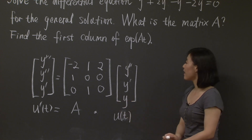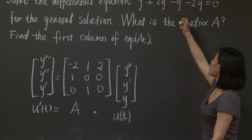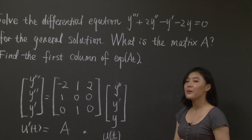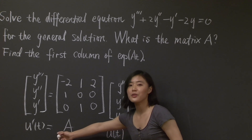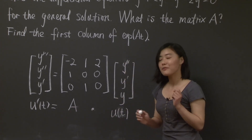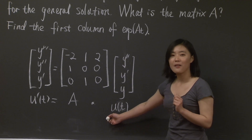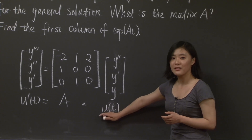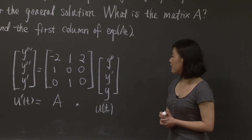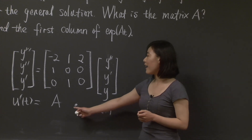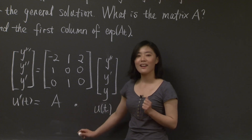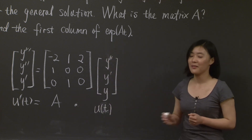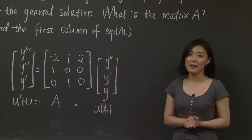Did you get the right answer? We have transformed this third-order ordinary differential equation of y into a first-order differential equation of u(t). Although u(t) is a vector, if we can solve this equation for u, we have all the information we need for y. In order to solve this equation, we will need the eigenvalues and eigenvectors of this matrix A. Why don't you pause the video again and try to complete this problem on your own?